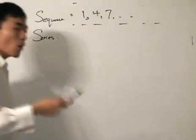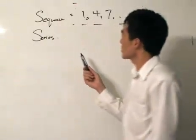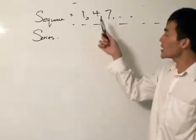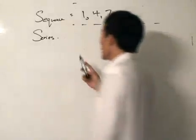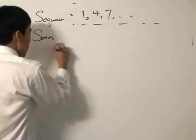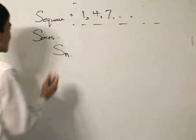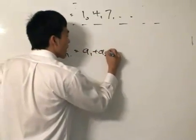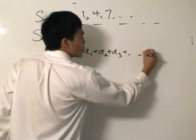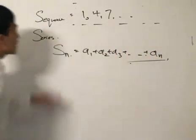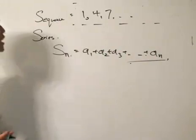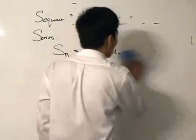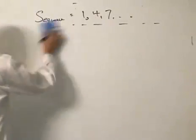Now a series is what we do with the numbers in the sequence. In a series, we are basically adding up all the terms in the sequence up to a certain integer. We write it as S(n). So the series up to the nth integer equals the first term, added to the second term, added to the third term, all the way to the nth term. We are adding up the terms in the corresponding sequence — just basic definitions to clear up the difference between a series and a sequence.